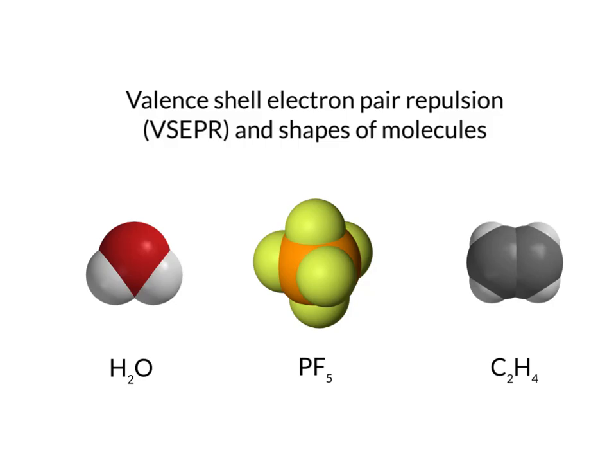Now that we can draw Lewis structures for molecules, we can start to think about how those Lewis structures tell us something about the shapes of the molecules. When we draw a Lewis structure, we aren't trying to represent the shape of the molecule, but it turns out that where the electrons are in the molecule will determine the shape. I have pictured here a few molecules: water, phosphorus pentafluoride, and ethene, our C2H4. These molecules all have very distinct shapes, and that's because of where the electrons are in those molecules.